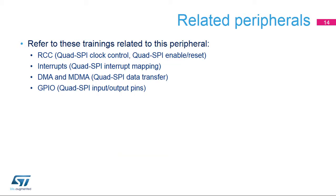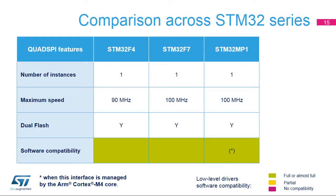You can refer to the training slides related to the RCC, interrupts, DMA, and GPIOs for additional information. The Quad SPI interface is fully compatible with the one available on the STM32L4 and STM32F7 series, allowing a straightforward reuse of applications developed on these devices when the interface is managed by the ARM Cortex-M4 core.